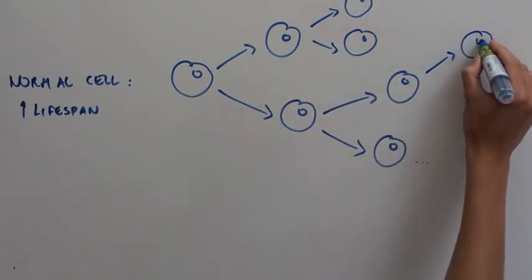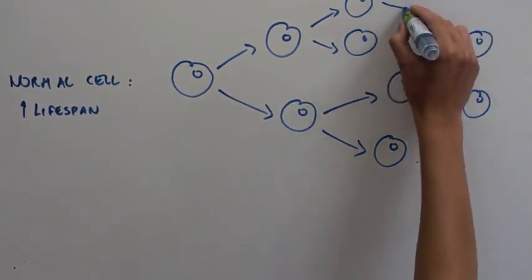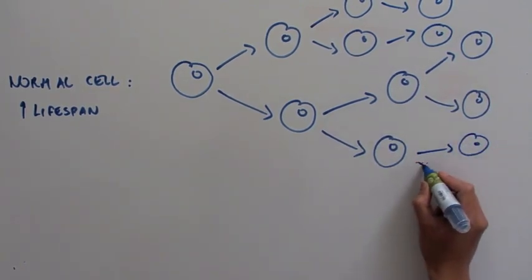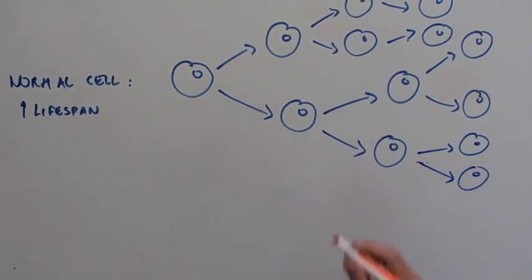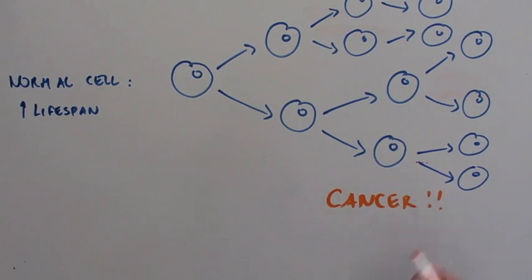As humans, we are trying to live longer, but if all of our cells also try to live longer, we get cancer. So it was very much possible that adding telomerase could allow cells to continue dividing beyond their normal lifespan and become cancerous.